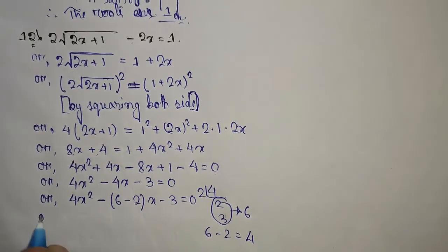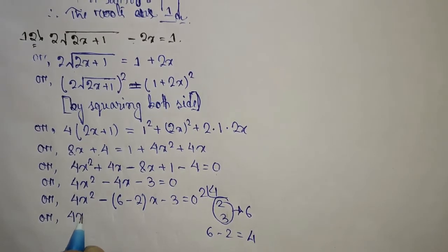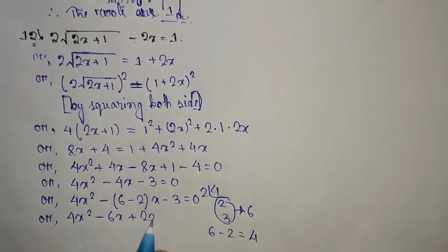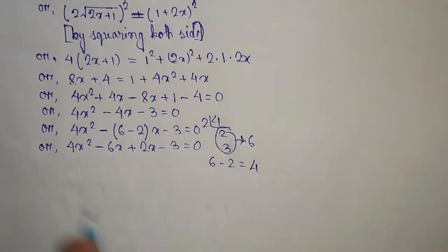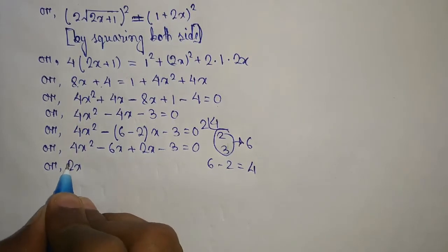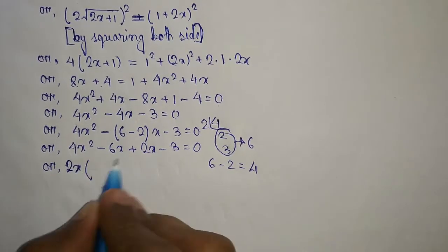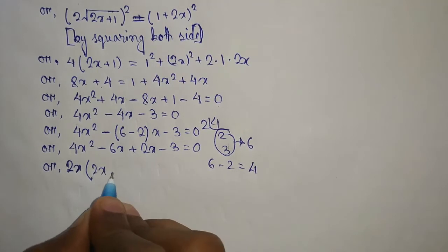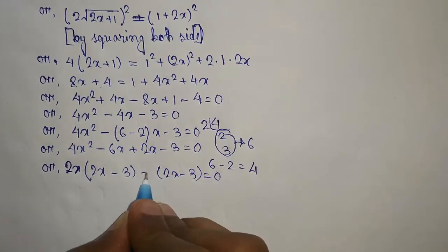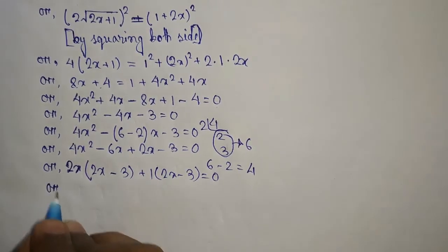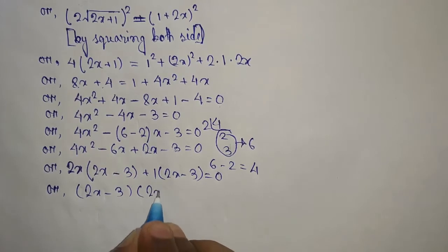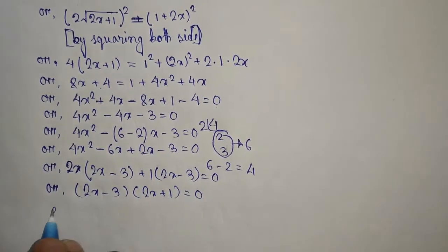We get 4x² minus 6x minus 2x minus 3 equal to 0. Taking common factors: 2x(2x minus 3) plus 1(2x minus 3) equal to 0. Therefore (2x minus 3)(2x plus 1) equal to 0.